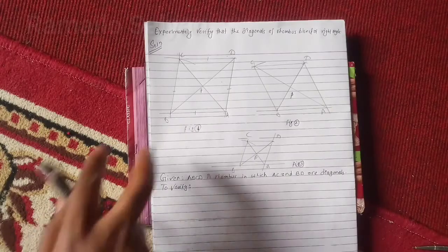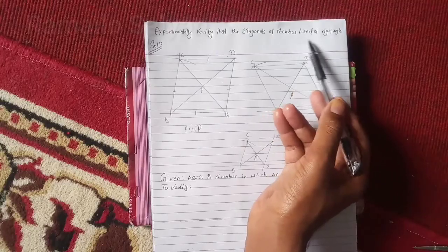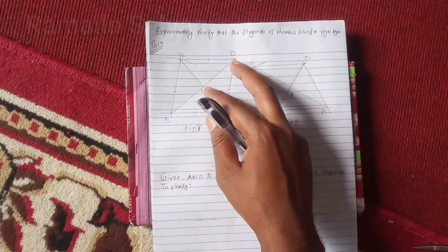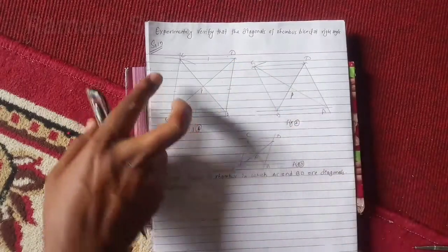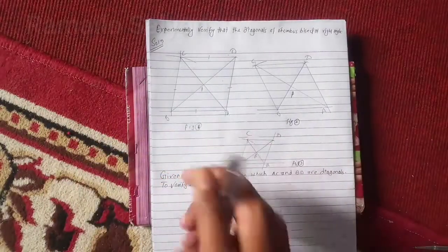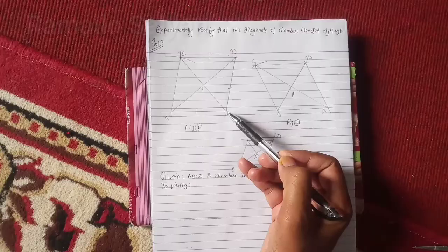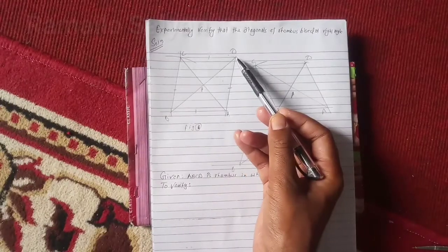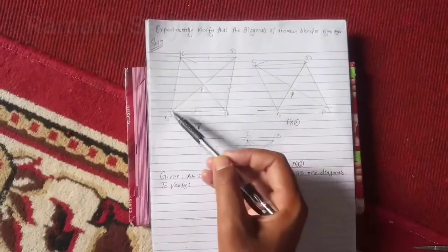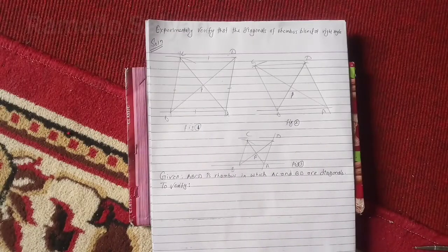To verify: the diagonals of the rhombus bisect at right angles. 'Bisect' means the length of BP equals the length of PD, and the length of CP equals the length of PA. 'At right angle' means angle BPA = angle APD = angle DPC = angle CPB = 90 degrees.